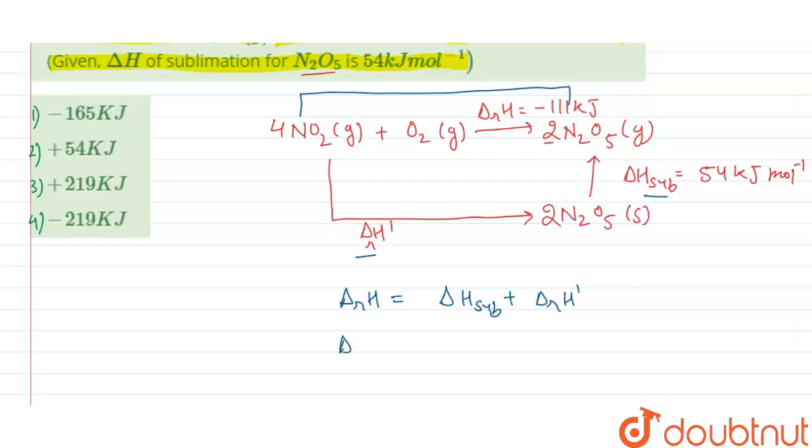Now we get delta RH dash will be equal to delta RH minus delta H sublimation.